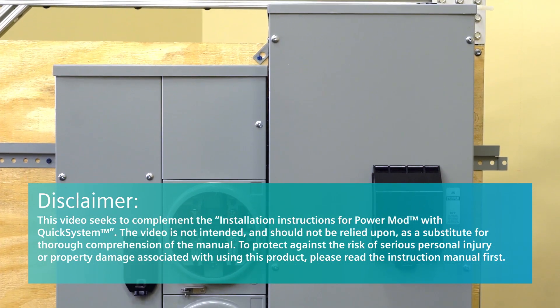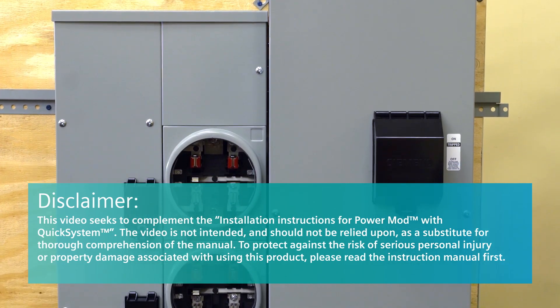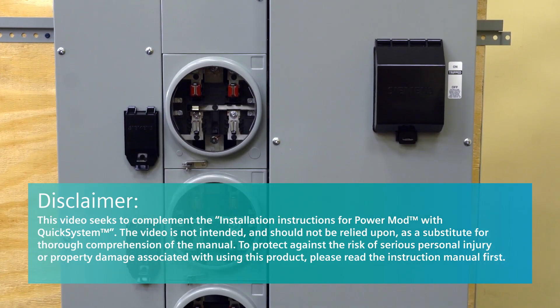If instructions are followed correctly, Siemens PowerMod can be installed up to 43% faster than our competitors' products.